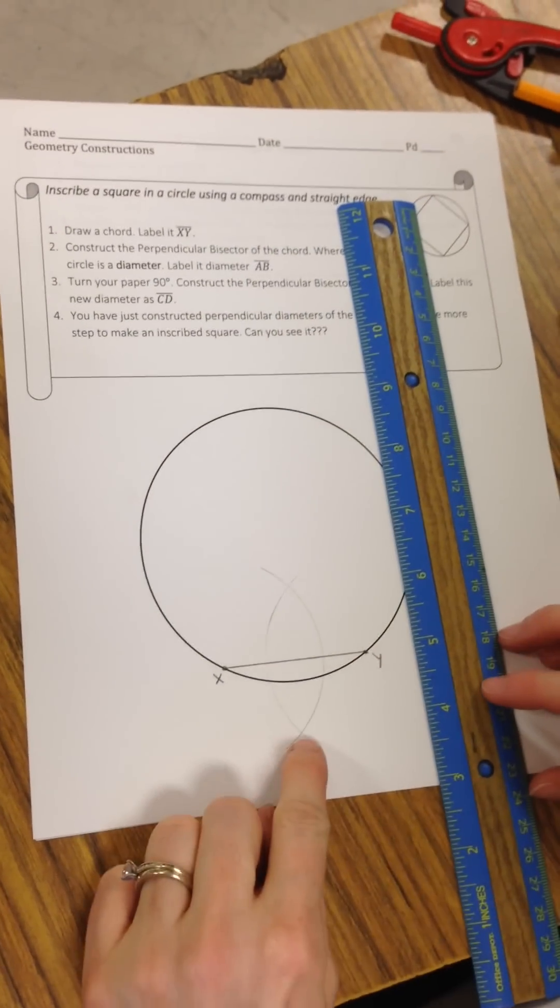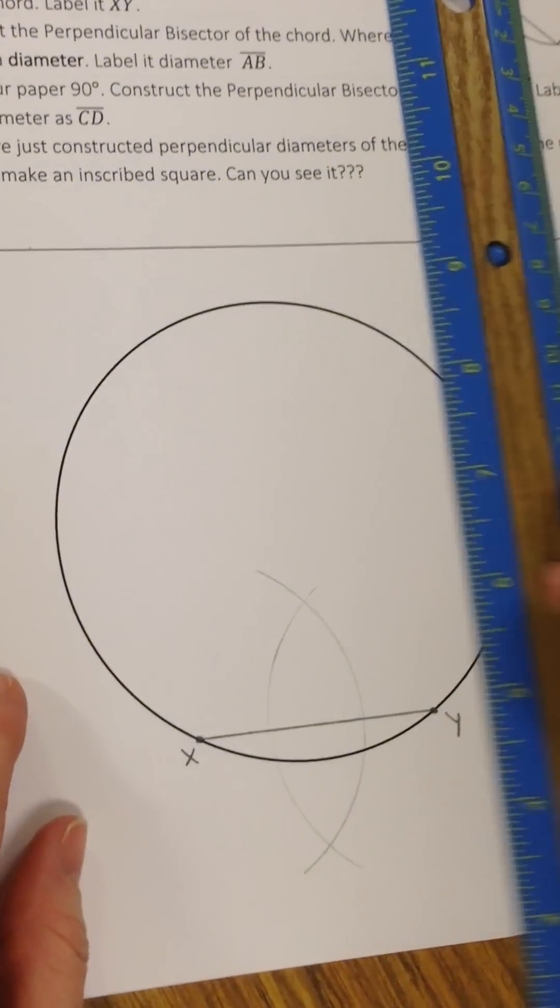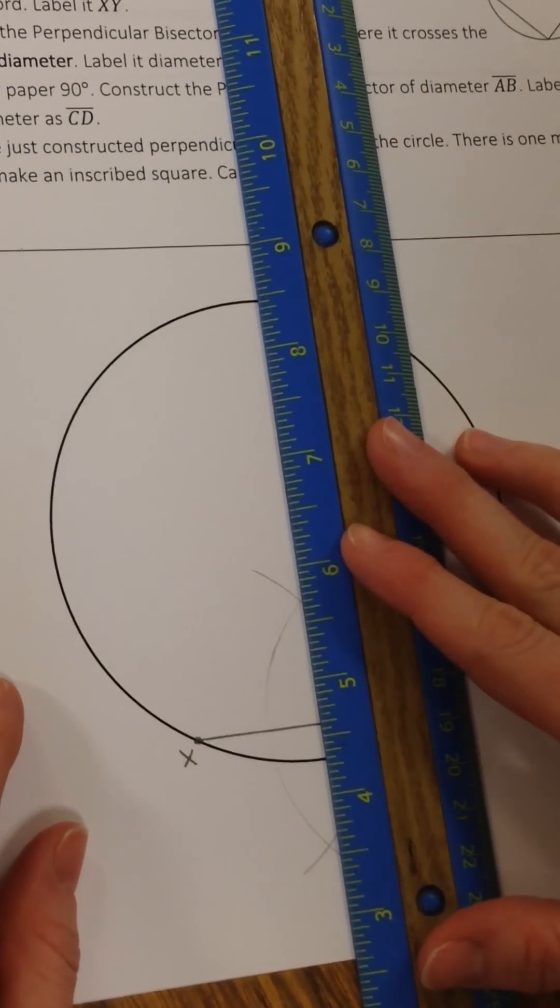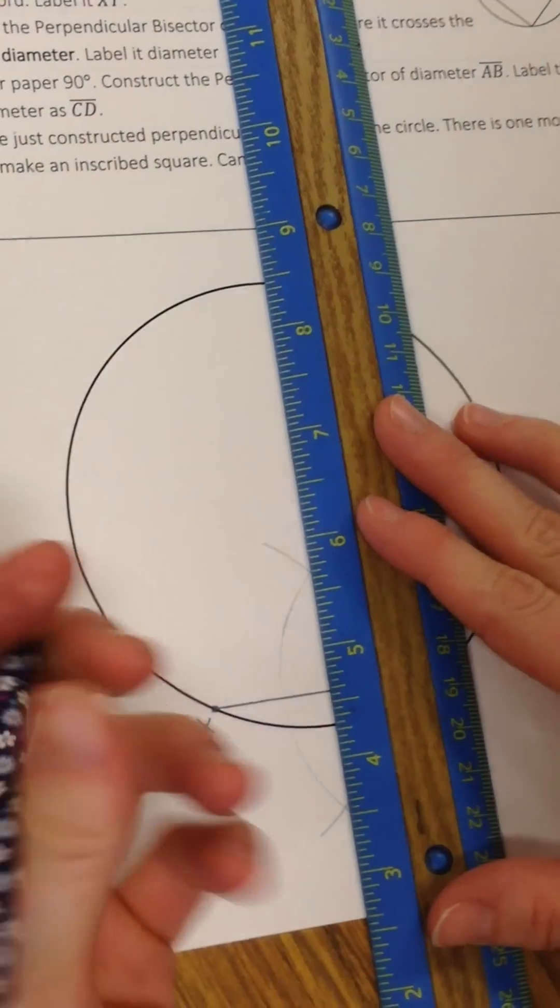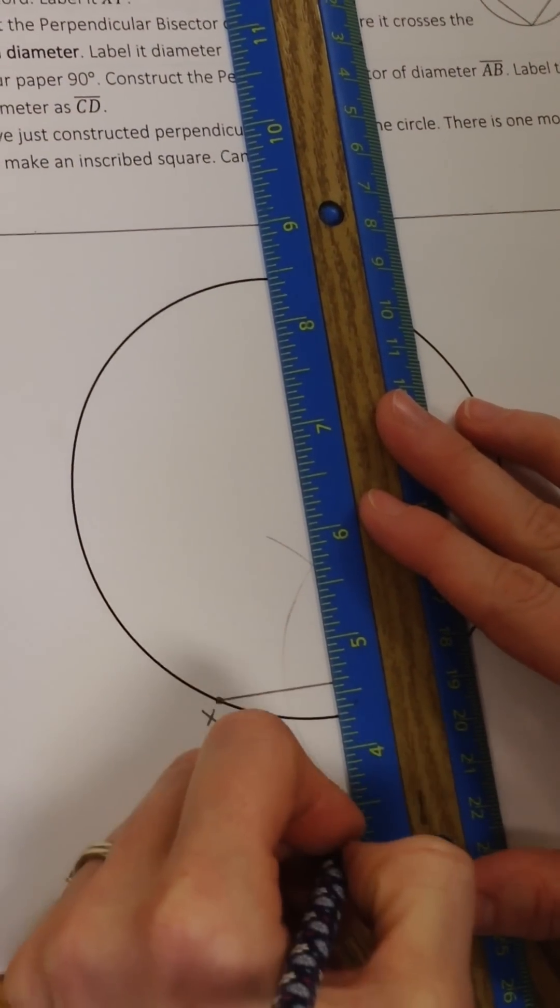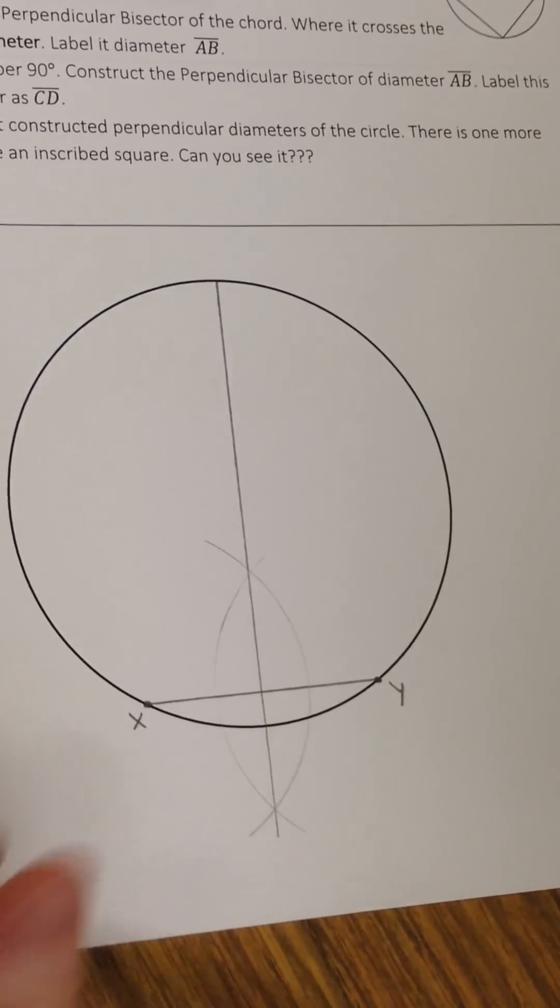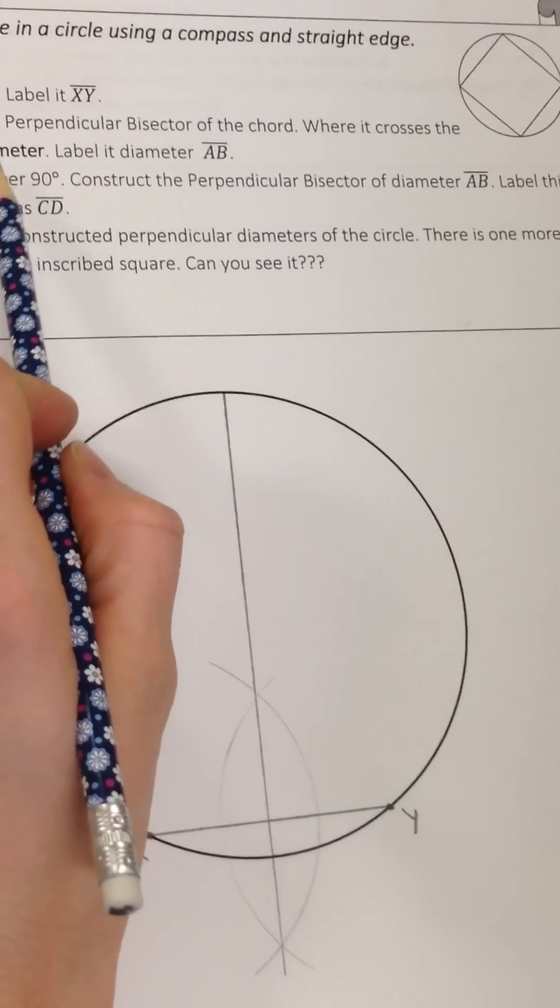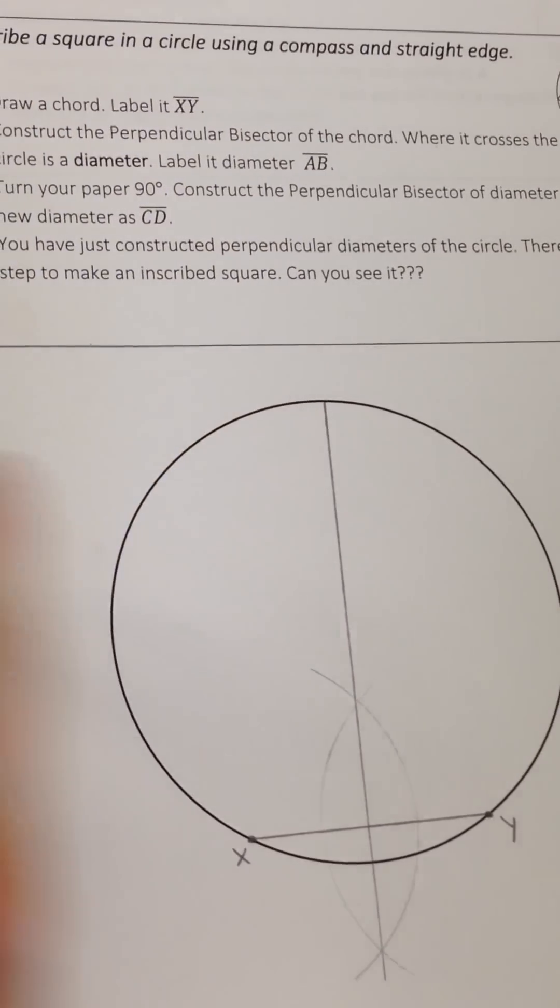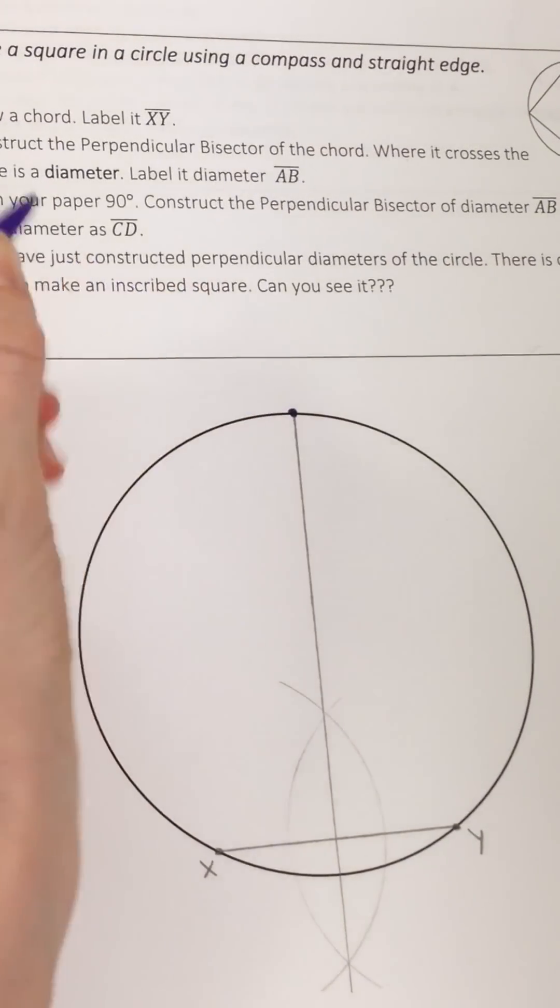Okay, so now we're going to connect those two, but make it go all the way up to the other side of the circle, the top and the bottom. It says where it crosses the circle is going to be a diameter. So we need to carefully label where that's going to be. We're going to label it AB. Up here it crosses the circle at A.